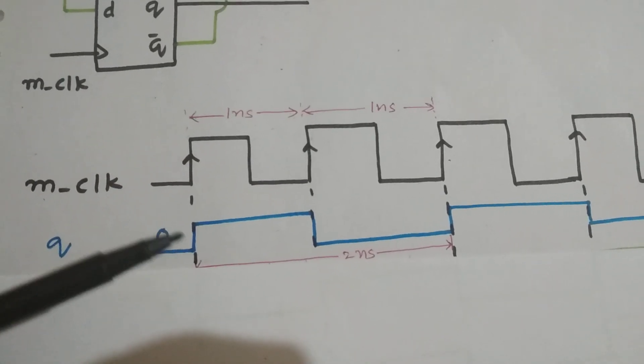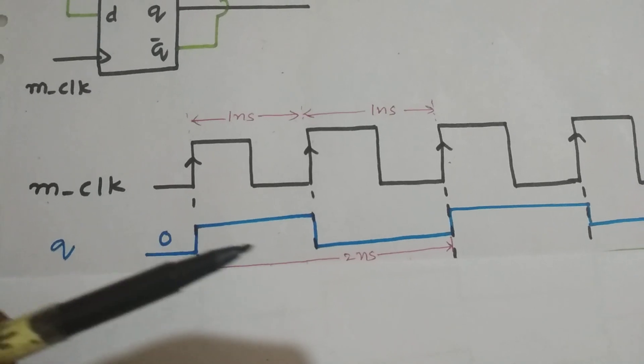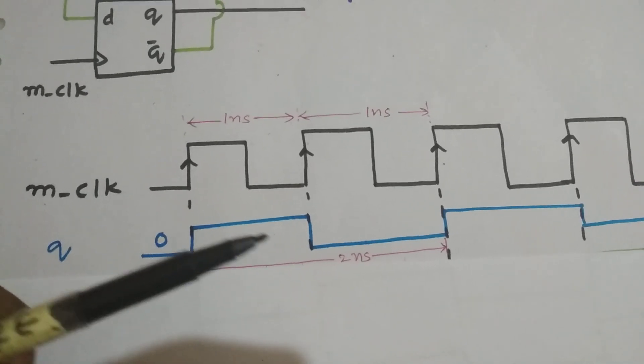So we need to get this waveform which has a time period of 2 nanoseconds and the frequency is reduced by 2.